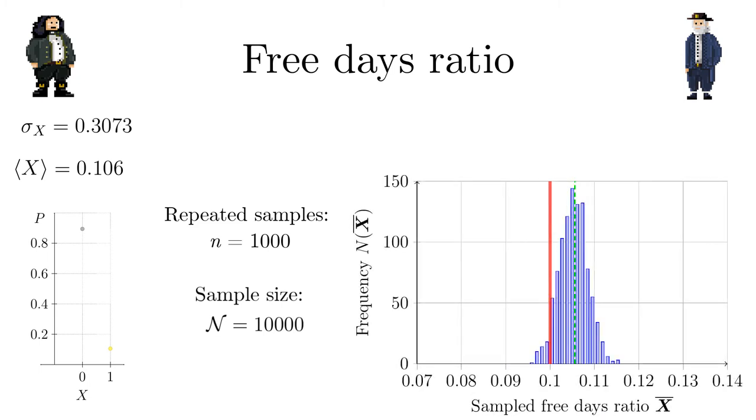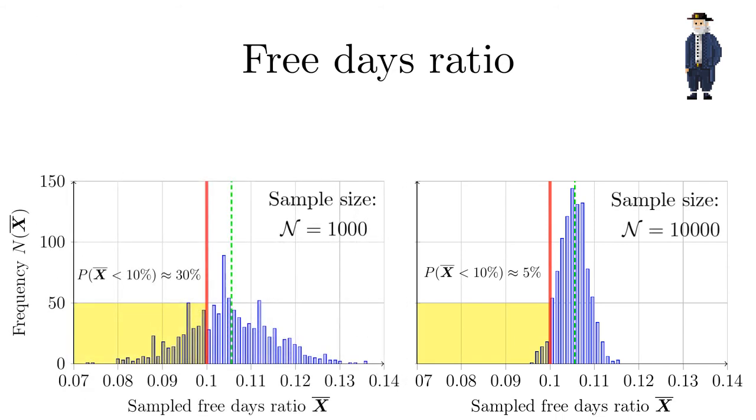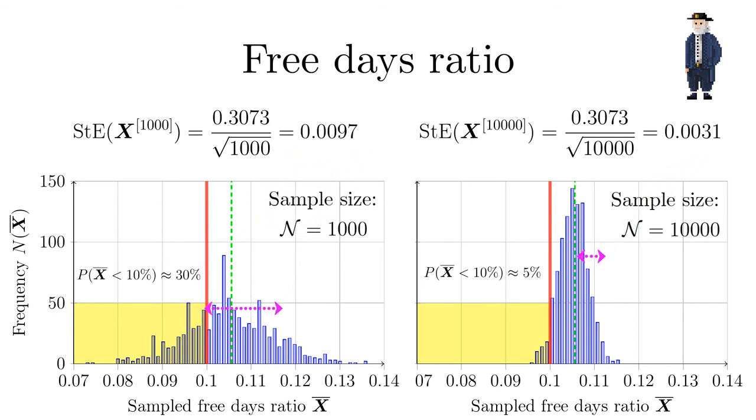Next, we repeat the same analysis for samples of size 10000. Now, there is only a very small tail reaching below the red line. In both cases the standard error is also included in the histograms indicated by horizontal arrows. Also in this representation we observe that only in the second case the 10% free days ratio can be guaranteed with high probability.